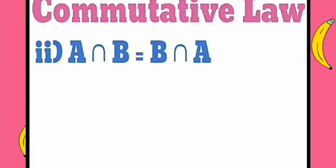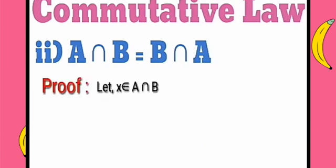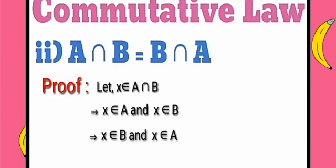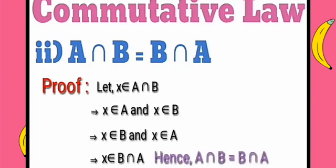The second commutative law is A intersection B is equal to B intersection A. Let x belong to A intersection B. That means x belongs to B intersection A. Hence A intersection B is equal to B intersection A.